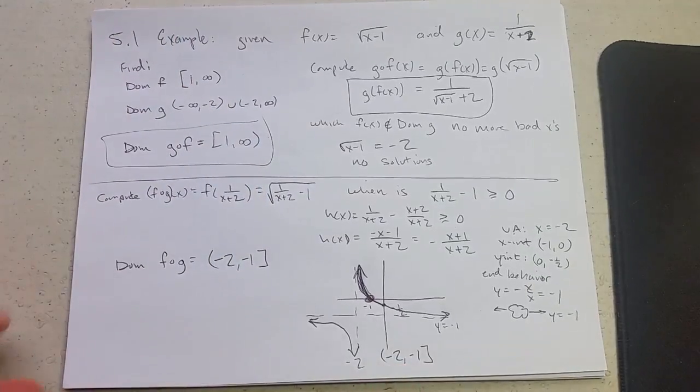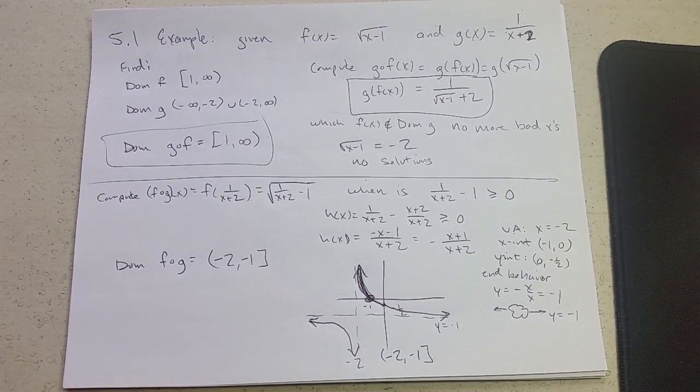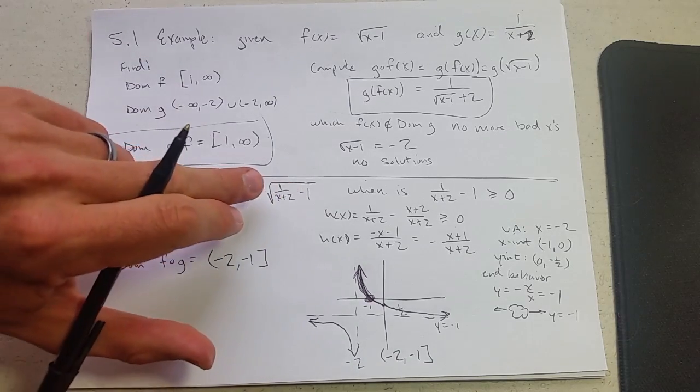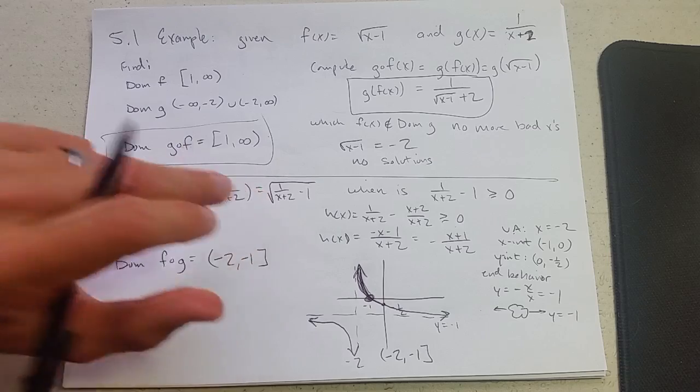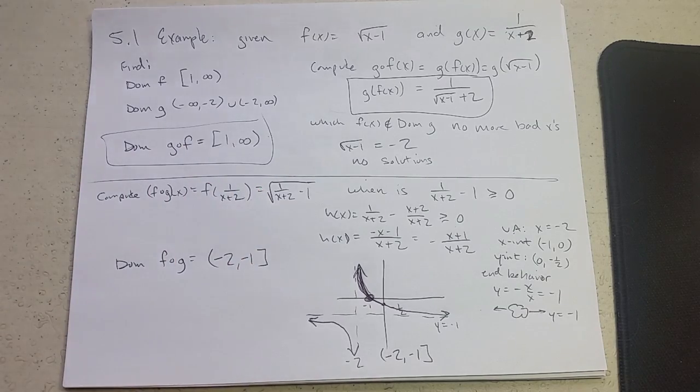These domains can get tricky. I recommend you look in the examples in the book. There's a few examples. Before you simplify, if you're careful, you can see the domain. Sometimes it involves rational function inequalities.